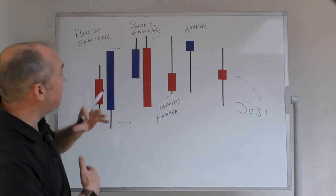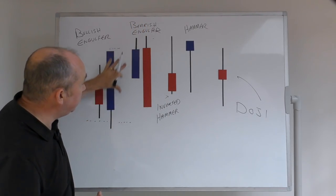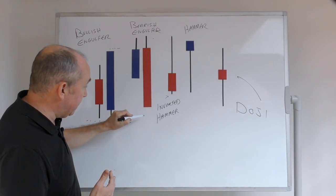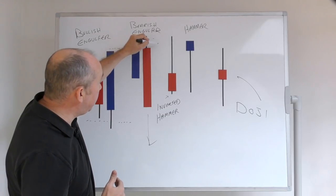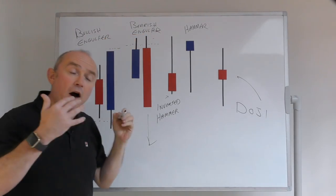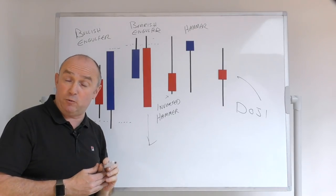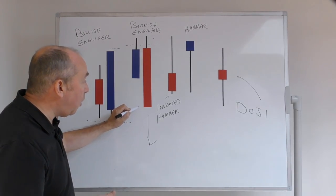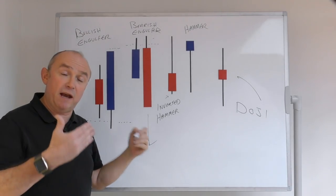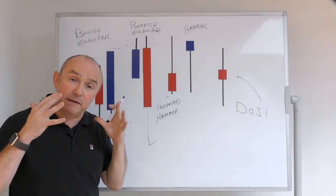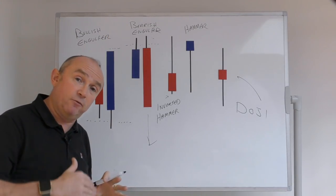Then you've got the bearish engulf — exactly the same but in the opposite direction. Here you've got a bullish candle, but the candle to the right fully engulfs it and closes lower. This is a bearish candle looking for a move to the low side. When you see a bearish engulfer at a key level of resistance, this gives you a high probability that the market is going to trade down. You could enter at the break of the low of the engulfing candle, with a stop above the high of the engulfing candle.